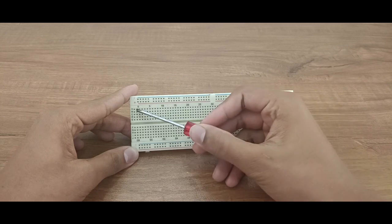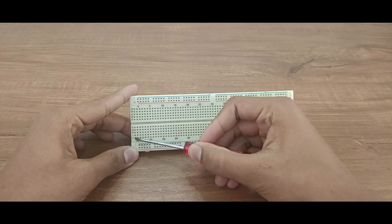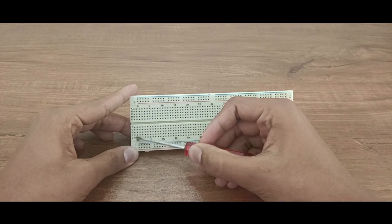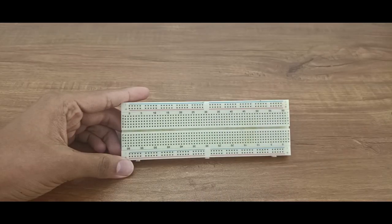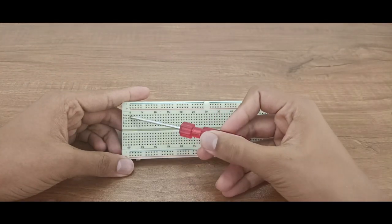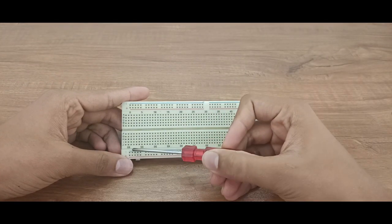In the terminal rails, columns a to e and f to j are not connected to each other. Each group has internal connections. As you are seeing, the columns within each group share the same connection.